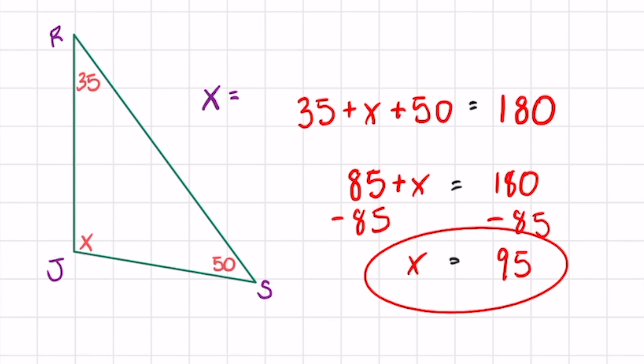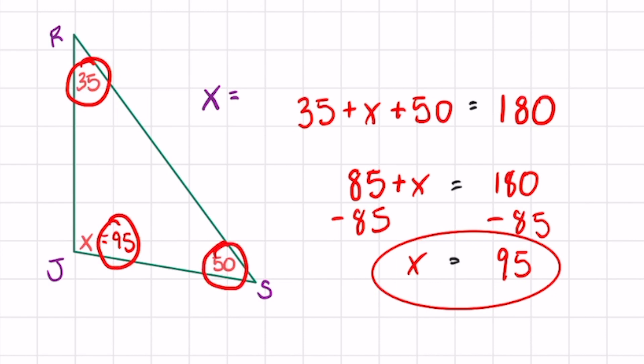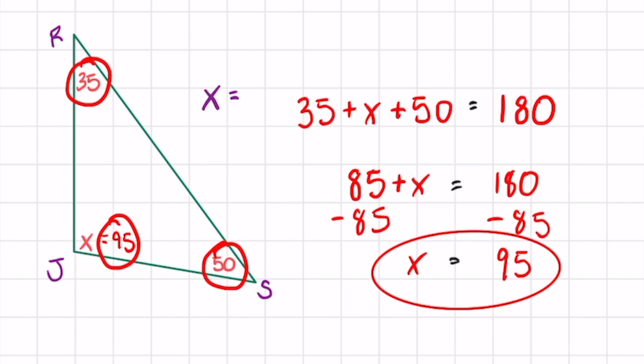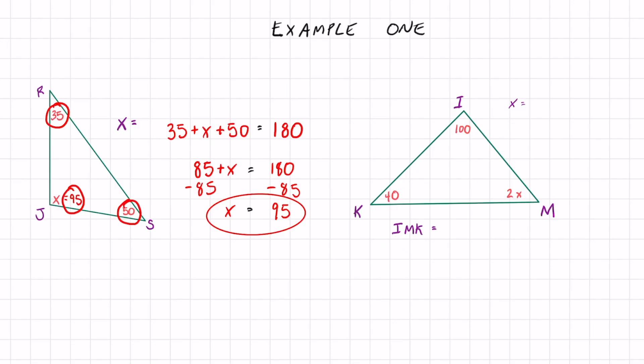Here's what I want you to start doing. I don't want you just to get an answer, I want you to know what it actually means. We said that x is going to equal 95. Here's how you check your answer: if I add 35, 95, and 50, that better equal 180. If it doesn't, then you did some algebra wrong. Always check: 35 plus 95 plus 50 should give you 180.